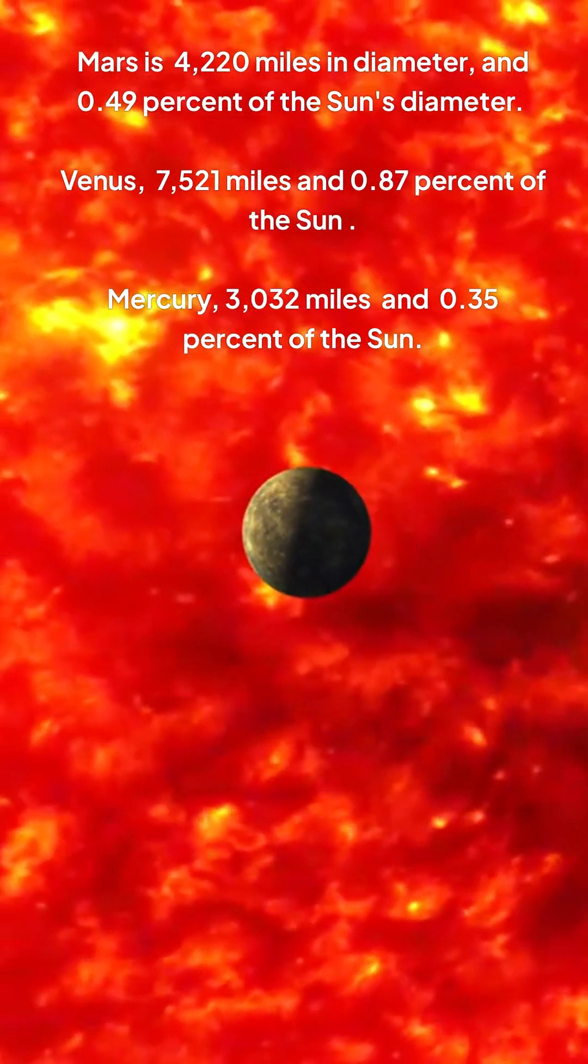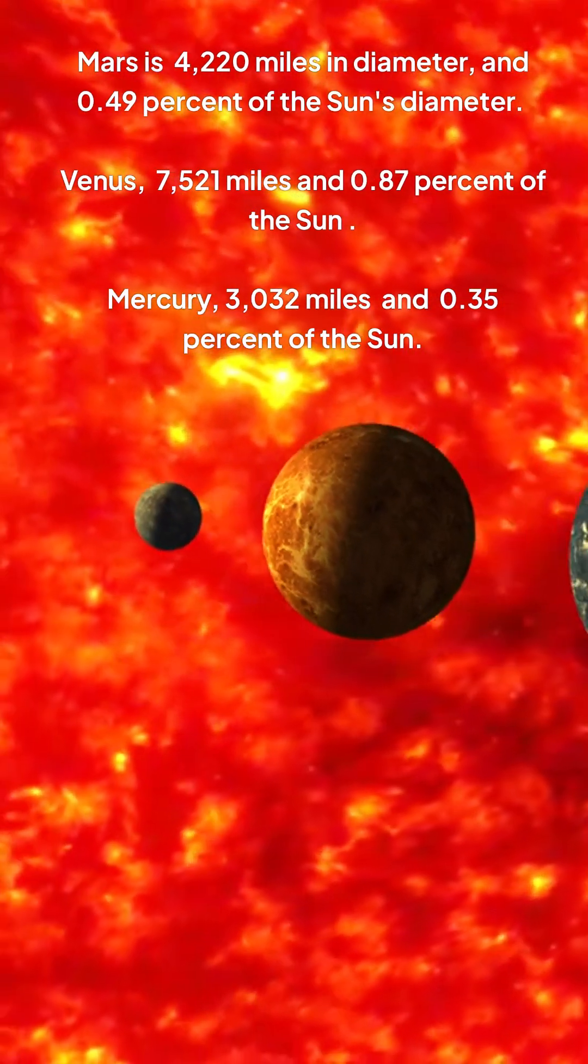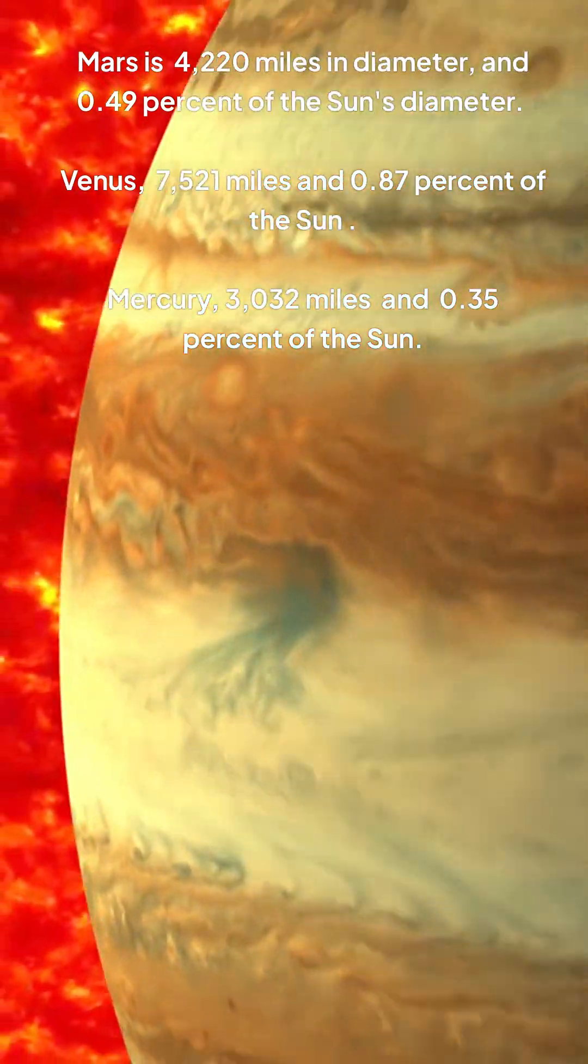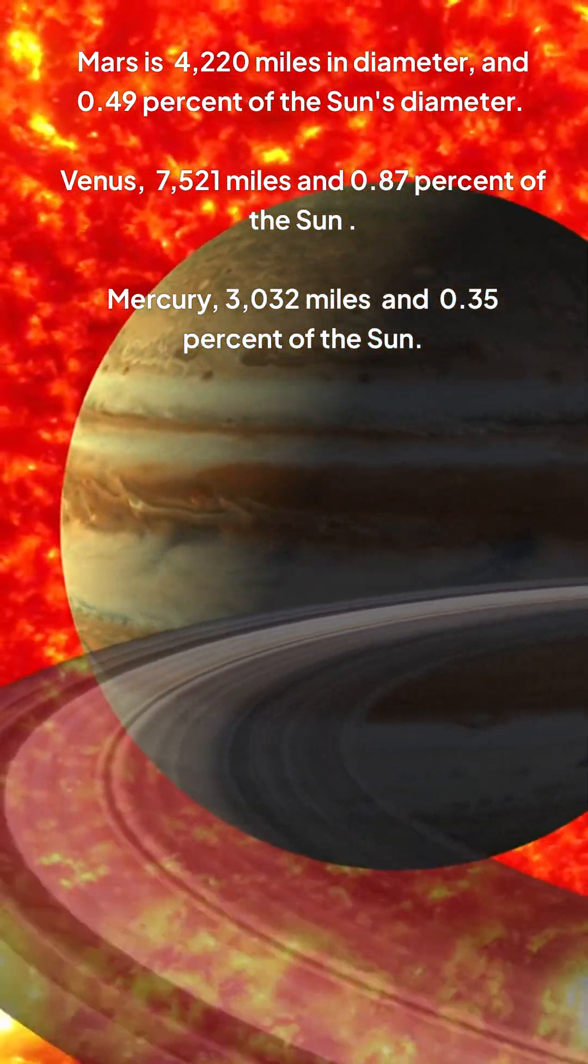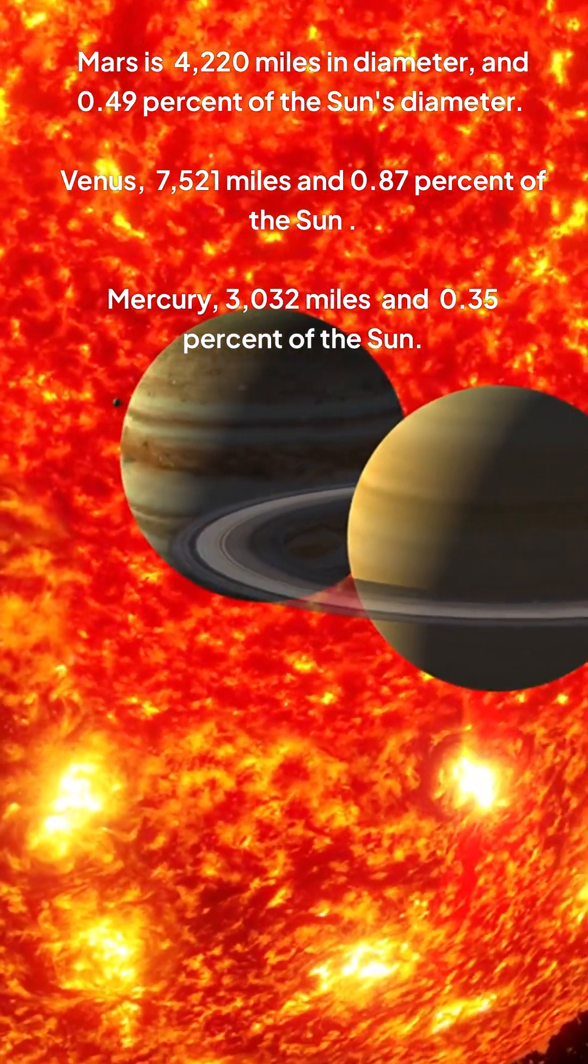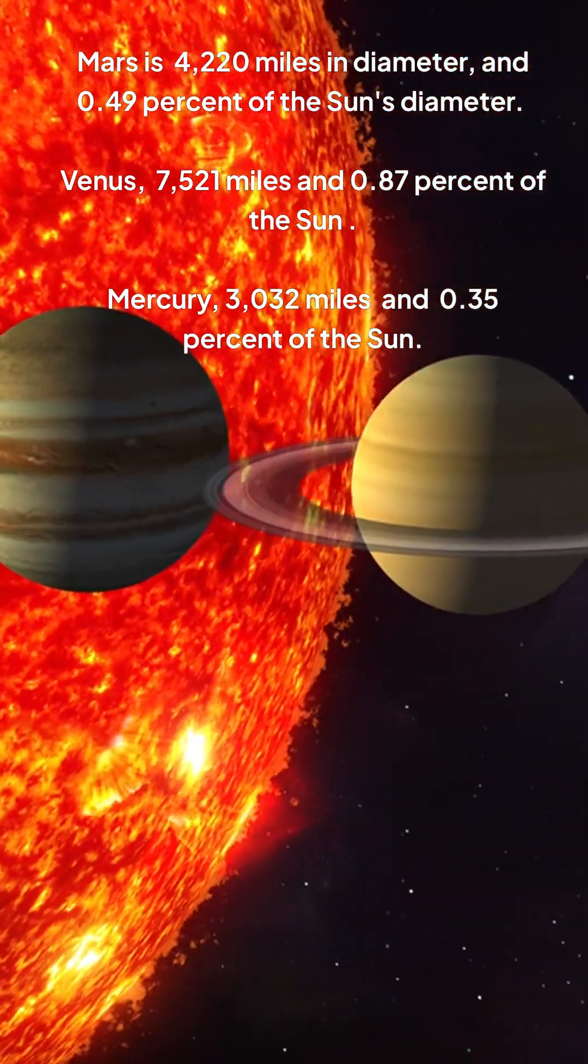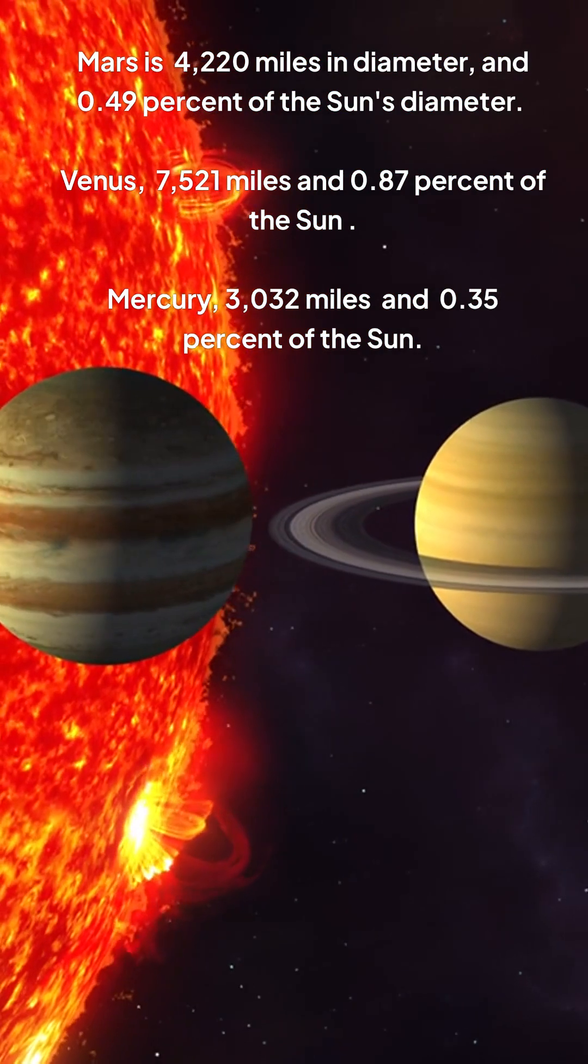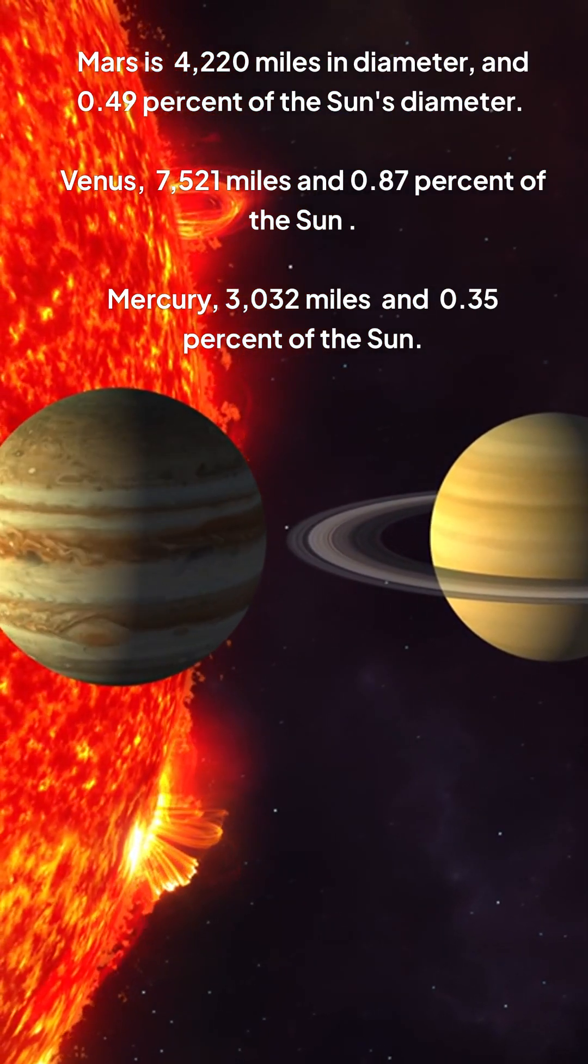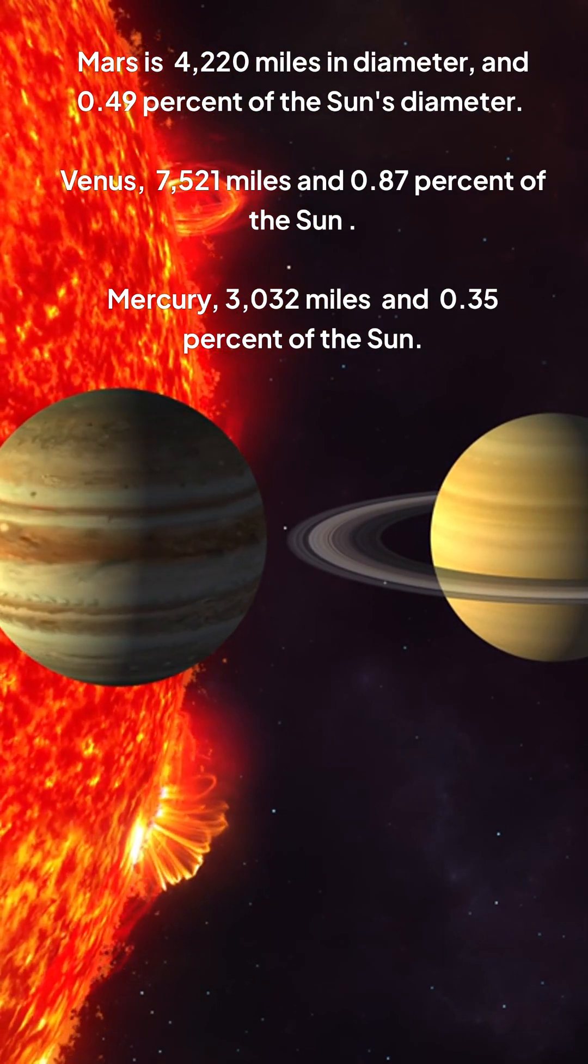Mars is 4,220 miles in diameter, and 0.49% of the sun's diameter. Venus, 7,521 miles and 0.87% of the sun. Mercury, 3,032 miles and 0.35% of the sun.